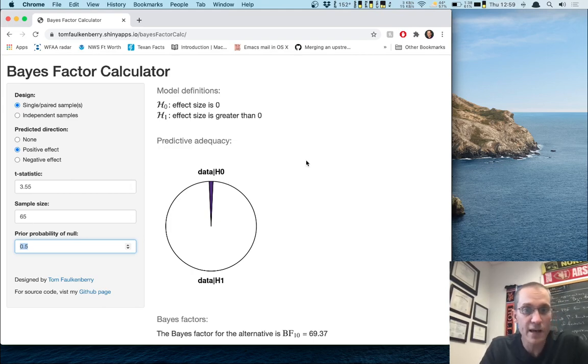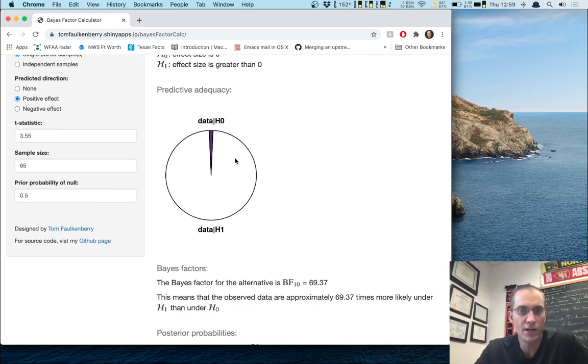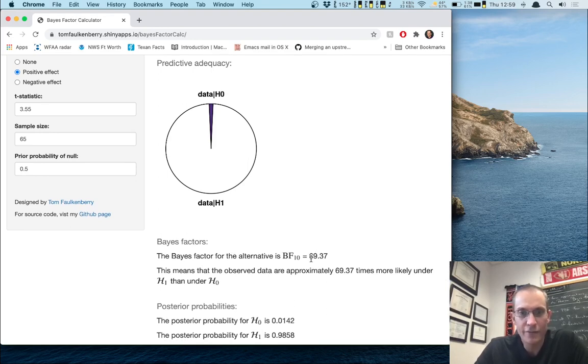And so doing that, you can see once I put those things in, a lot of things change over here. So first of all, the first thing we see change is this diagram here. This is that pizza plot that we were just looking at a little bit ago. This shows us a little bit about the predictive adequacy. This says that the data are much more likely under h1 than they are h0. How much more likely? Well, the Bayes factor for h1 over h0 is almost 70. It's 69.4. And here's an interpretation for you. This means that the observed data are approximately this many times 69.37 times more likely under h1 than under h0.